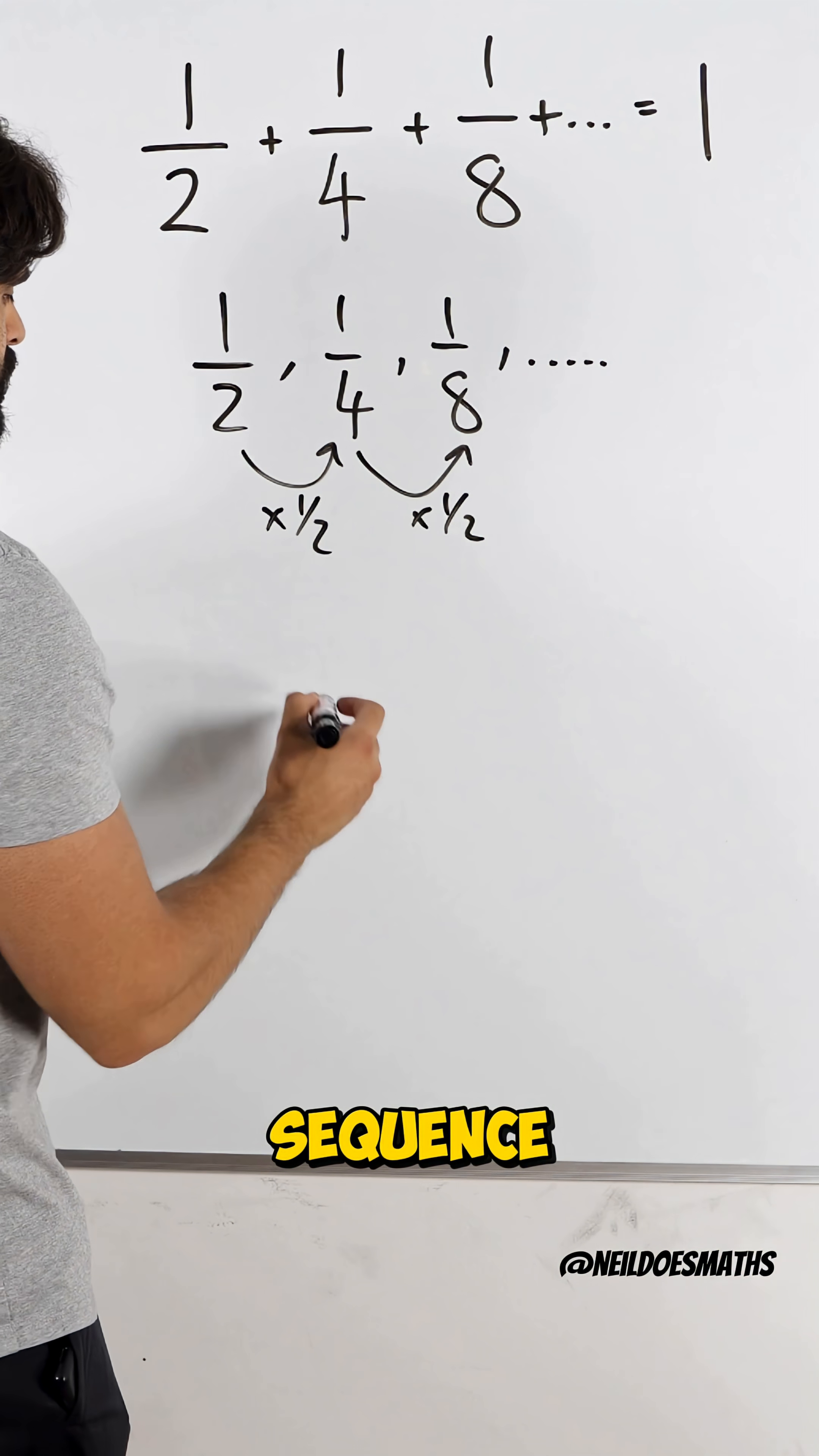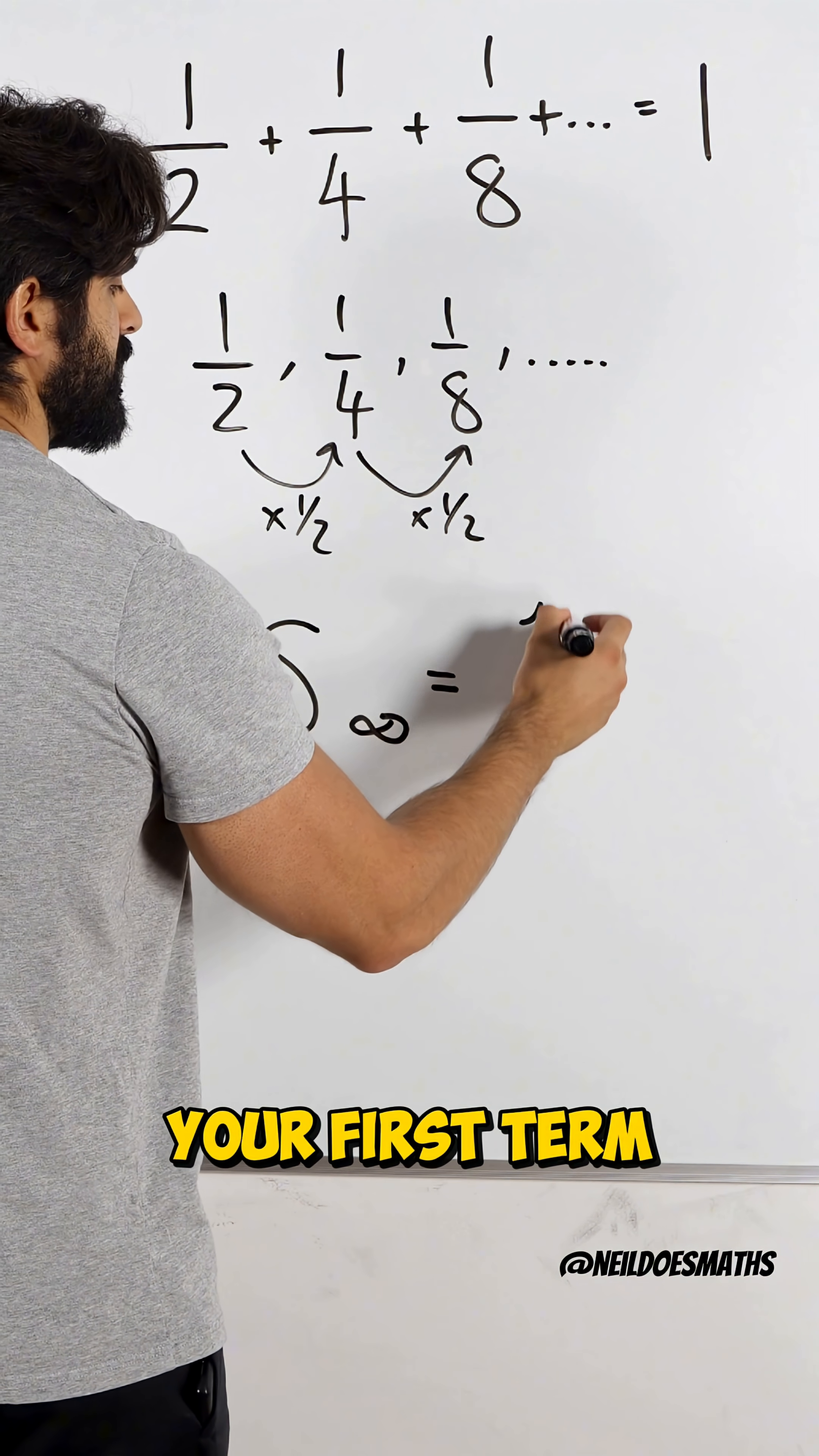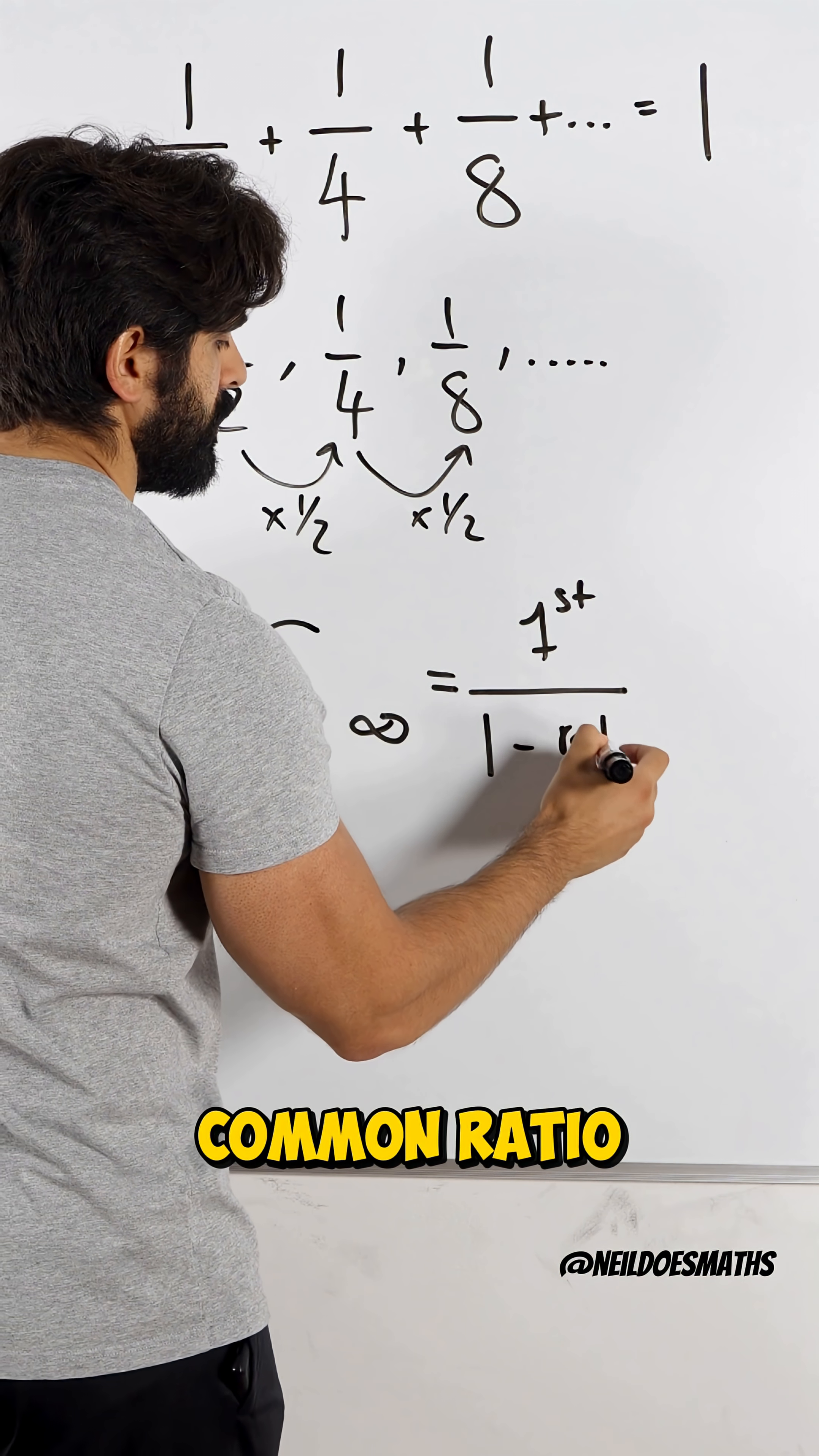For a geometric sequence to sum an infinite amount of terms, all you do is you take your first term and you divide it by one minus what we call the common ratio.